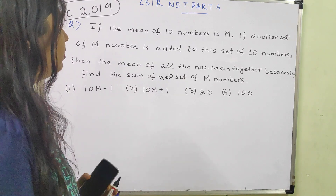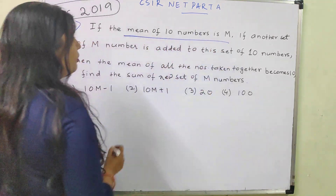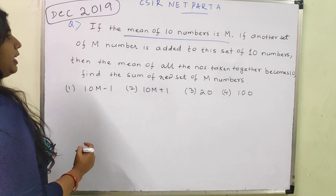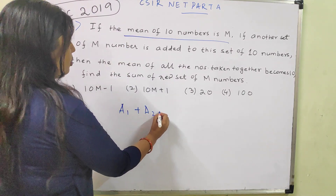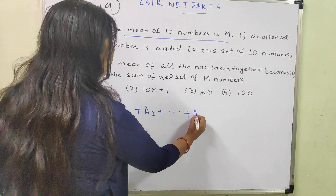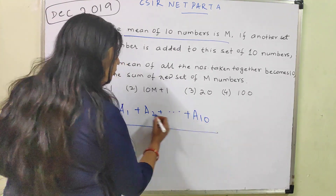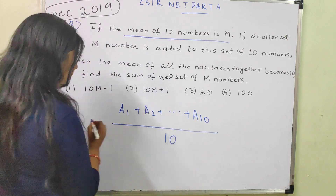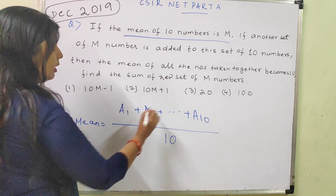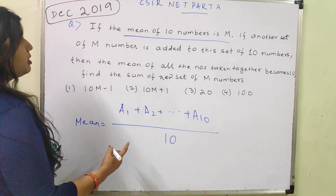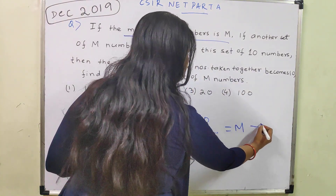One by one we can make the equations with the help of the given information. Mean of 10 numbers — let us take A1, A2, and so on up to A10. These are the 10 numbers. Mean equals the sum of all 10 numbers divided by 10, which is given as equal to M. So this is Equation 1.